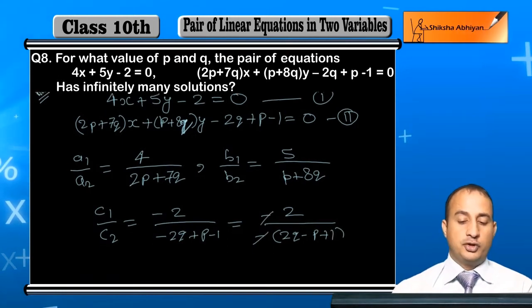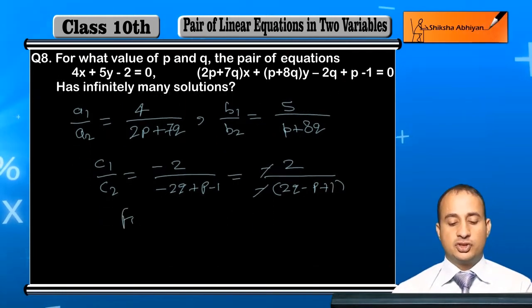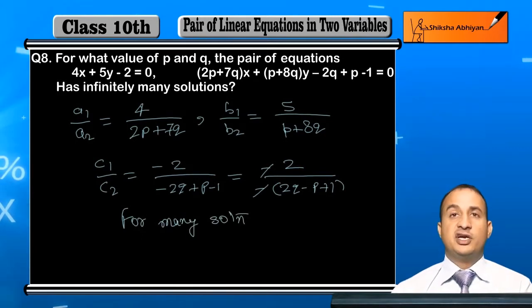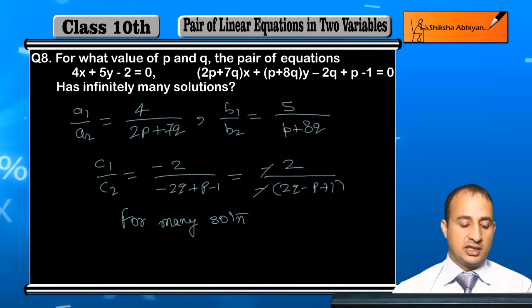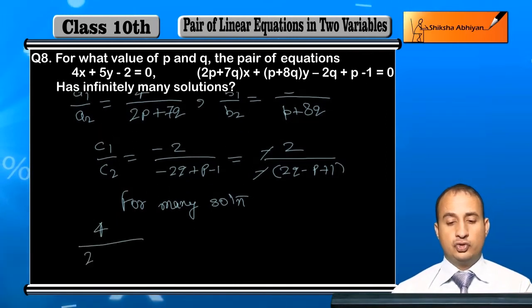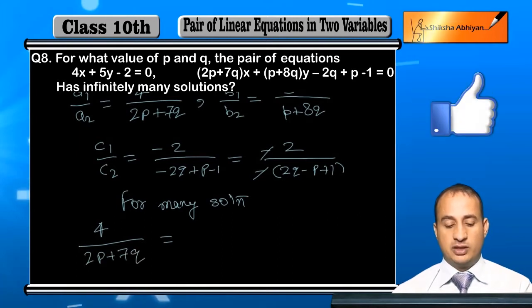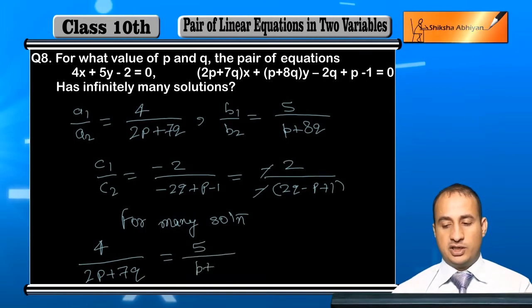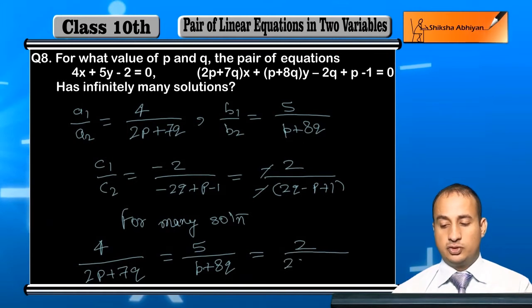Now, for infinitely many solutions, a1 by a2 is equal to c1 upon c2. That is 2 upon 2q minus p plus 1.